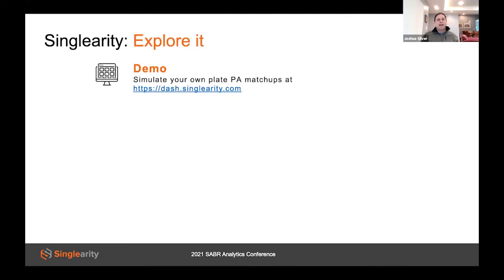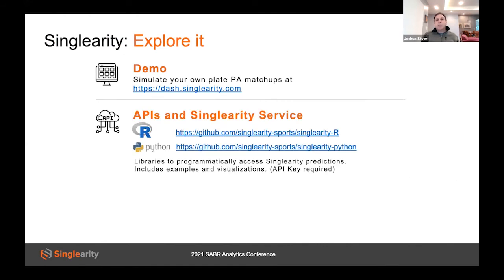Finally, and this is the part I'm most excited about: we built Singularity with the goal of making advanced AI accessible to anyone. There are three ways you can try things out — first, you can demo your own batter versus pitcher matchups on the web; second, you can programmatically integrate Singularity predictions using R or Python; and third, you can use, view, or modify our open-sourced Markov chain code. I hope you'll try it out.